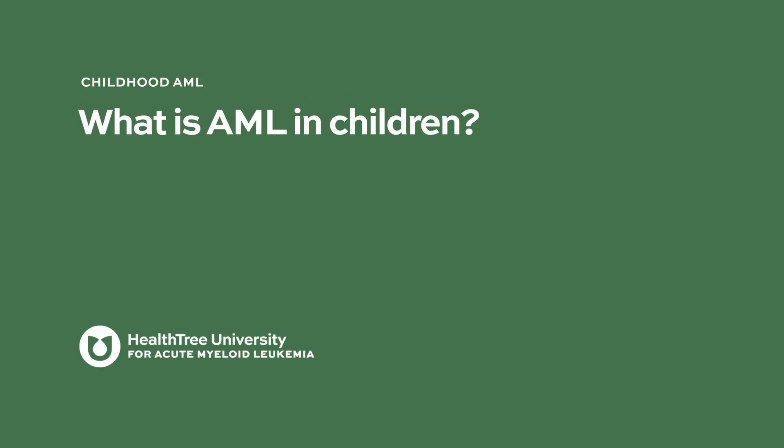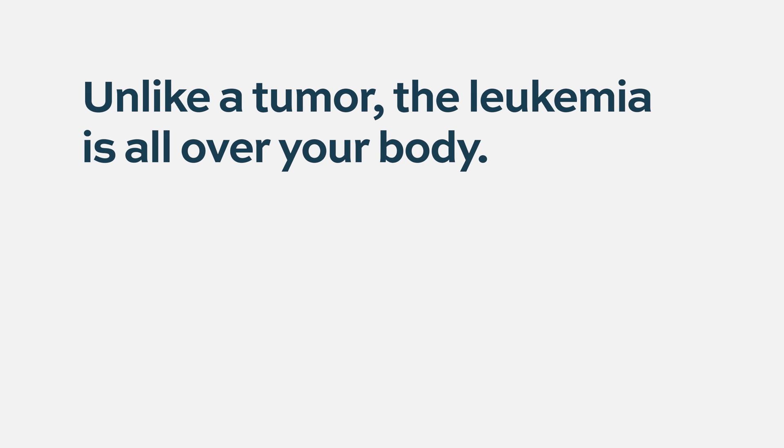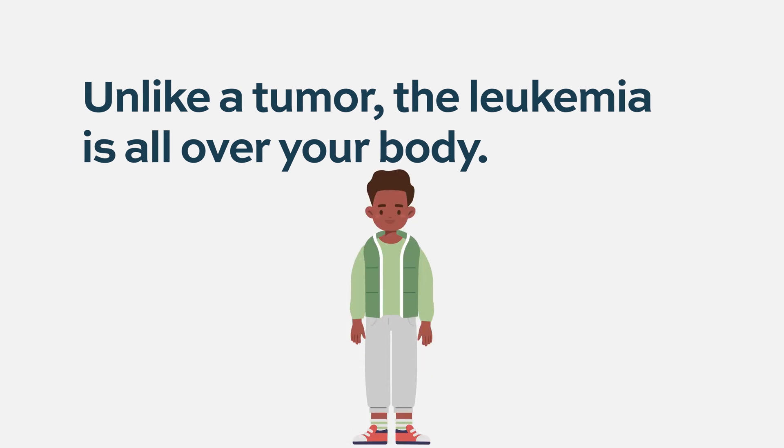What is AML in children? Acute myeloid leukemia in children is when some of the blood cells in the body — the myeloid cells, which is one of the types of cells that makes up your immune system — starts making too many of themselves, and they grow and grow and grow. But unlike a tumor that occupies one space and gets bigger, since the blood cells are all over your body and all in your bones, the leukemia is all over your body.